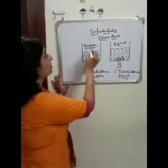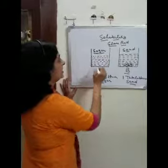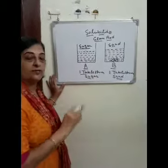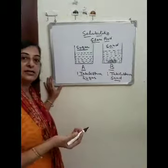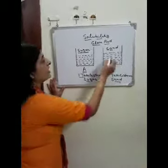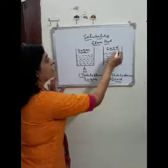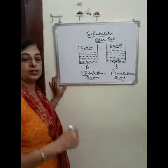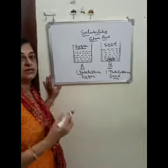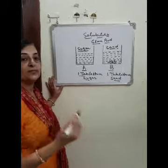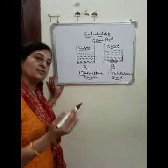So, sugar is soluble in water — it is completely dissolved in water. And sand is insoluble in water because it does not completely mix with water.